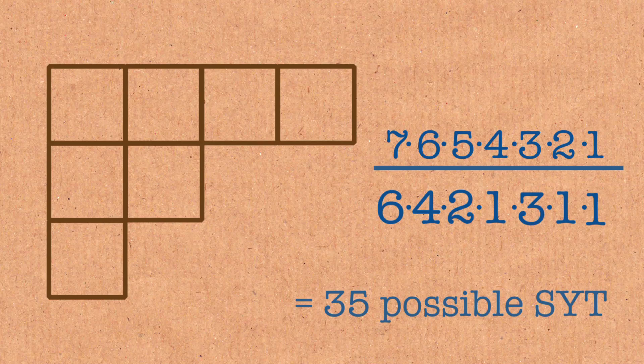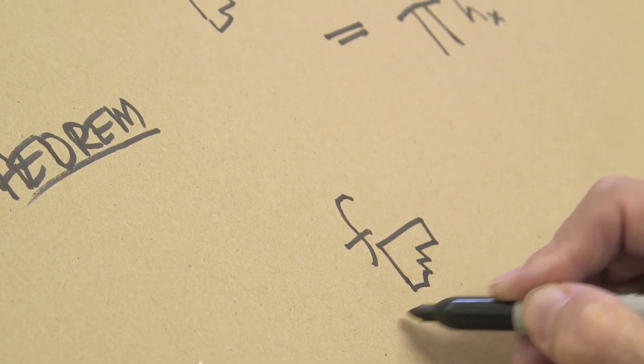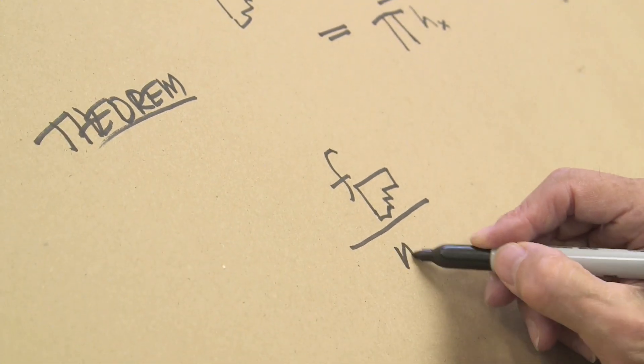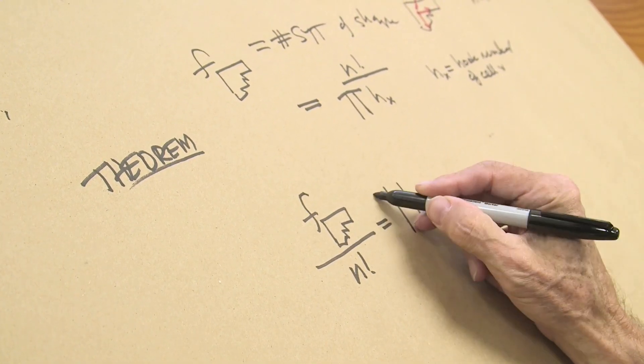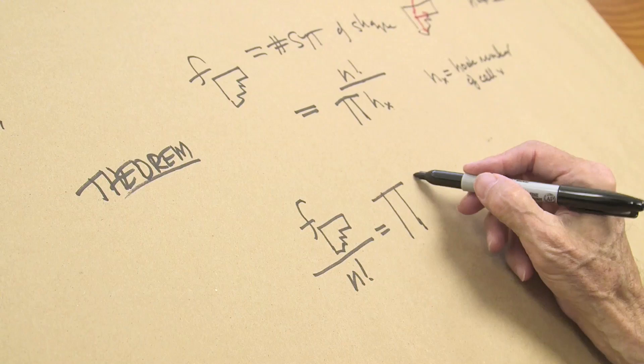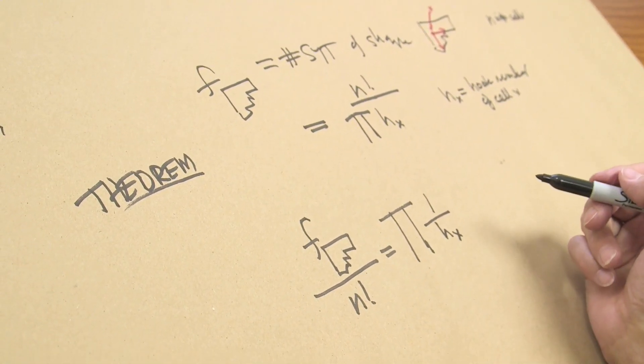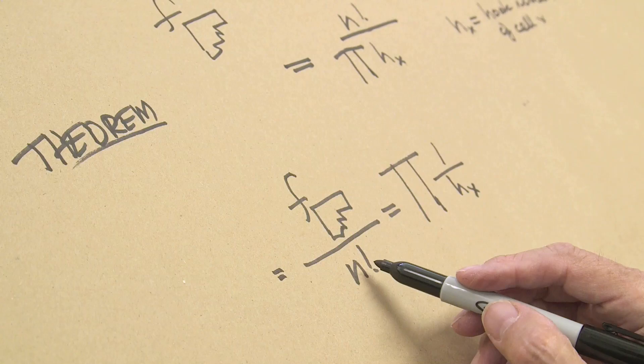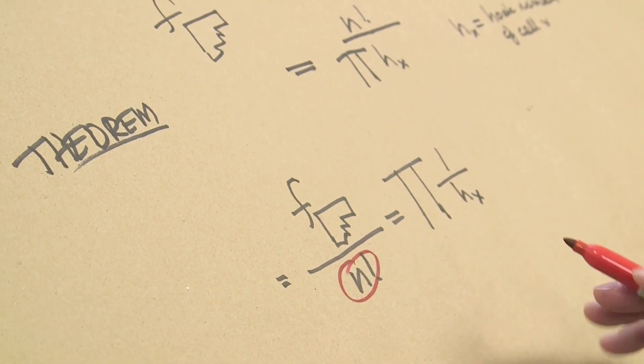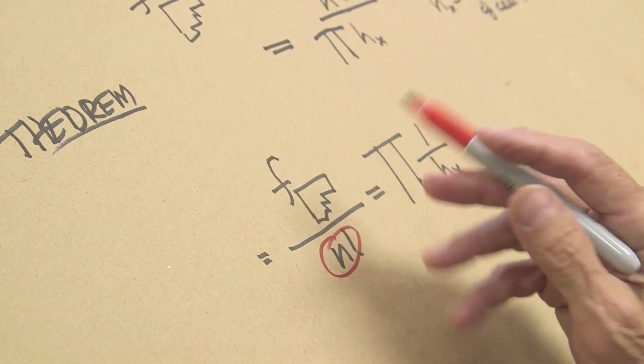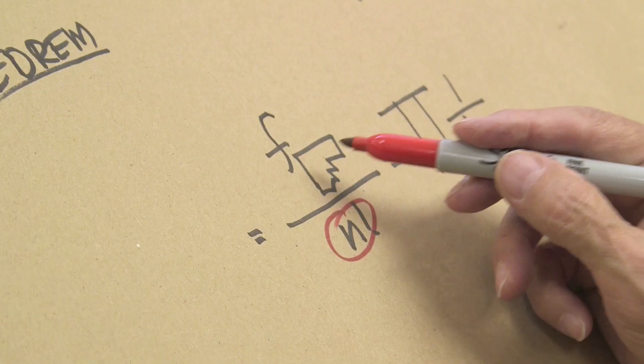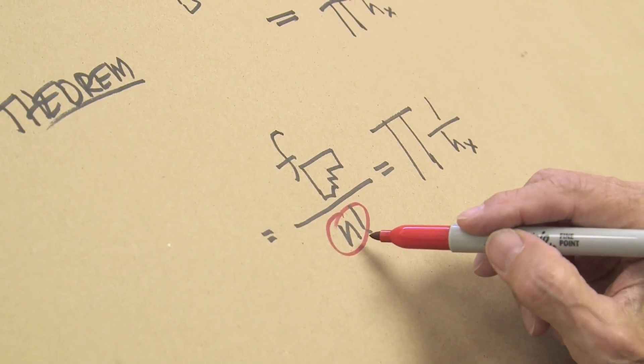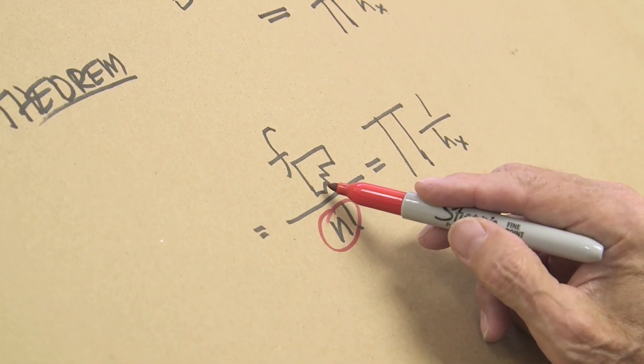Another way to think about that, this is completely equivalent. I can write it this way: f sub shape divided by n factorial equals the product of 1 over h sub x. You just rearranged the equation. I've just rearranged the equation. I've done nothing fancy at all, but I can now think of the left-hand side as a probability. The reason is because n factorial is the number of ways of sprinkling the numbers 1 through n into this shape without regard to any rules whatsoever. This is the number that do satisfy the rules. Therefore, if you were to pick a random sprinkling of numbers, the probability of it being a standard tableau would be this probability.